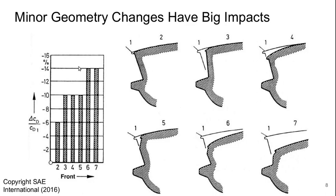When we get to changes like 3, 4, and 5, which are still pretty minor compared to the baseline, that's a 10% drag reduction. If we go a little further with 6 or 7, we get a 14% drag reduction.